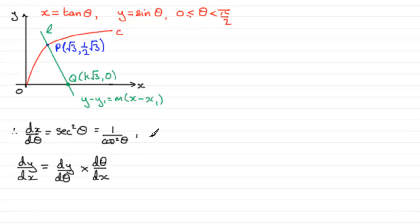When it comes to dy by d theta, then dy by d theta, if we differentiate sine theta, we get cos theta.